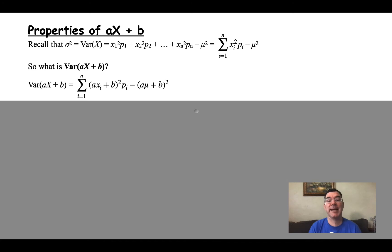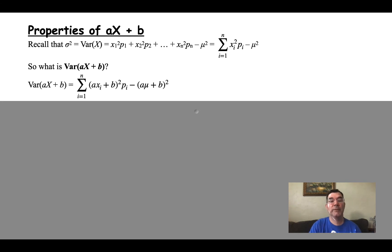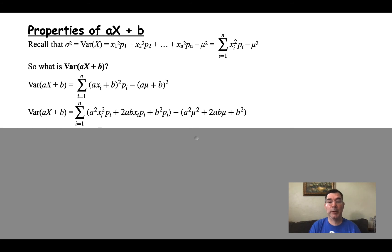So what happens to the variance as x gets multiplied by a constant a and maybe another constant b is added on? All I'm doing again is replacing every xi with a times that xi plus the other constant b. And if all of that is happening to all of the x's, it's also happening to the mean, as we saw in the previous slide. The new mean was going to be a times mu plus b, so I'm replacing mu in the original formula with a times mu plus b. I expand the parentheses and multiply everything by pi in that sum, then square that second set of parentheses.